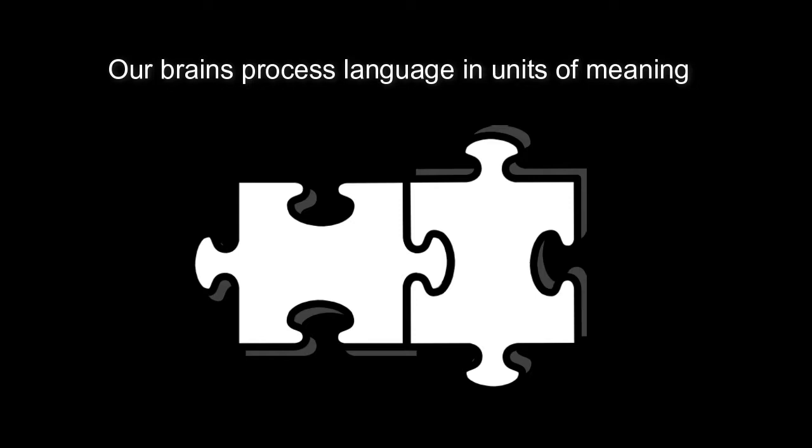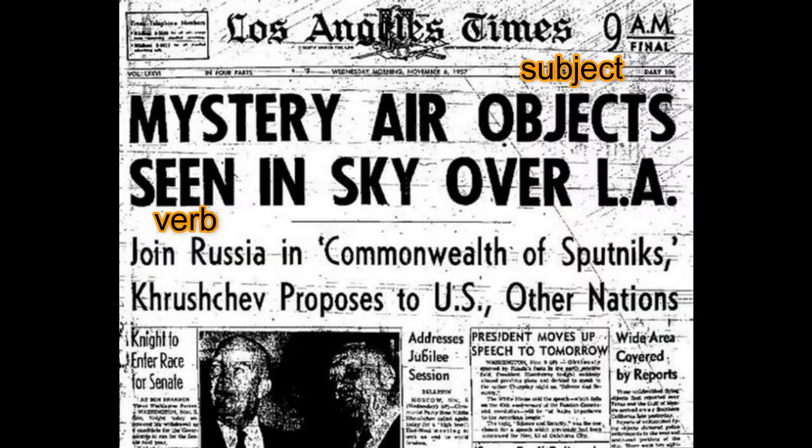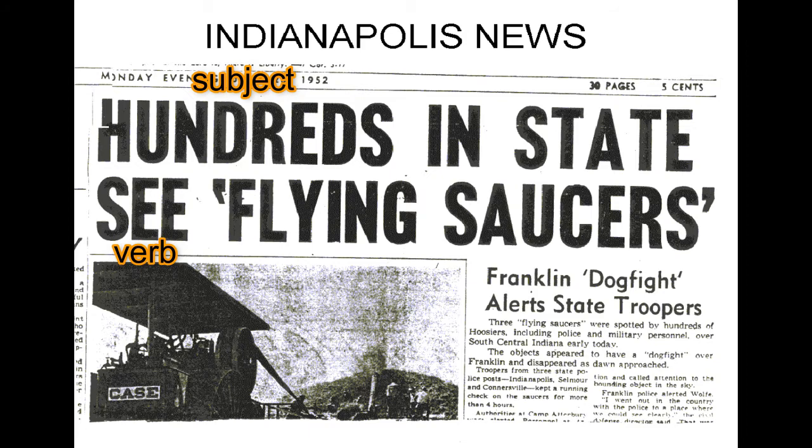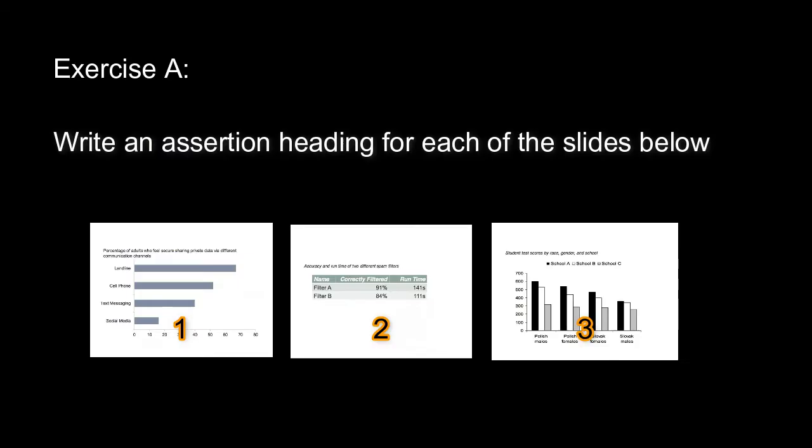But why the complete sentence? Well, people process information in units of meaning. What is a unit of meaning? A sentence, a subject, and a verb. You can find evidence of this if you take a look at a newspaper. Every headline is a complete sentence because people communicate meaningful thoughts in sentences, not in abstract phrases.